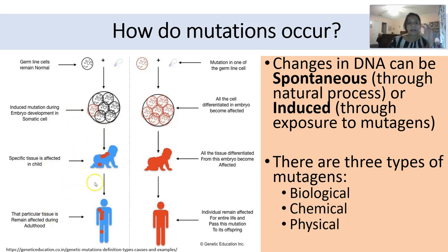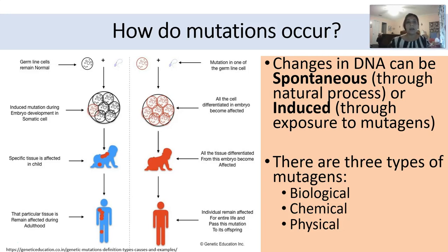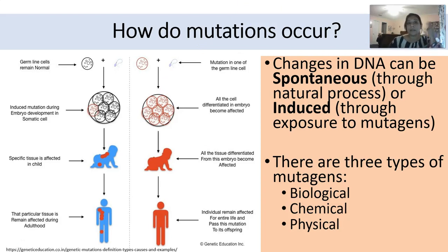On the left side you can see an example where germline cells are completely normal but, sometime during embryo development, one cell becomes mutated — a somatic cell that's never going to be an egg or sperm. In that case, certain tissues or parts of the body will carry that mutation as the organism develops, while others are not affected at all. Those areas derived from that mutated cell could potentially show the associated phenotype in various ways.